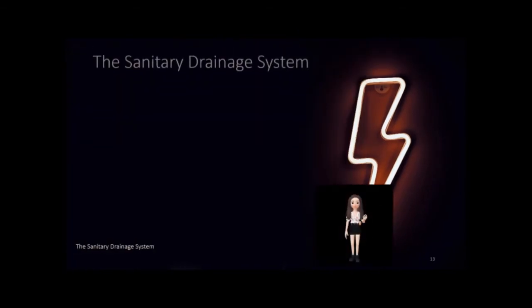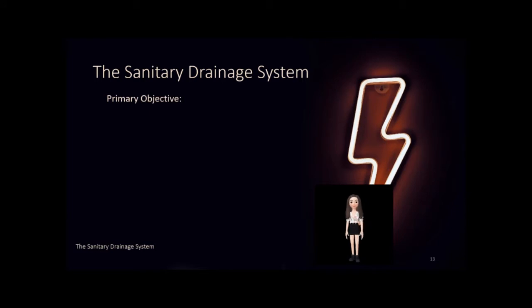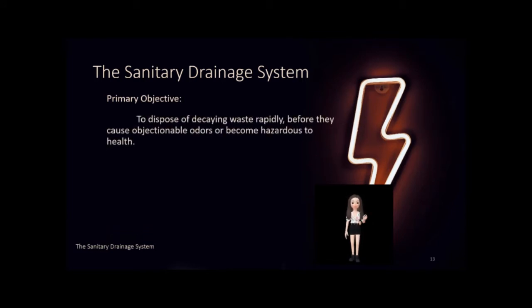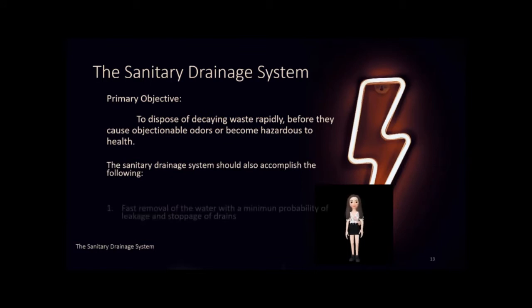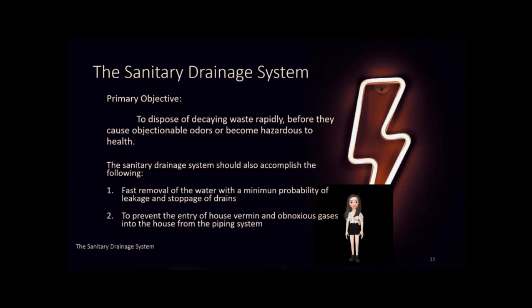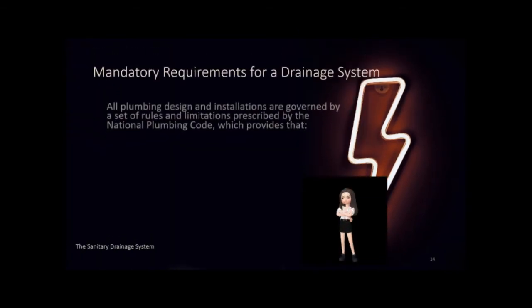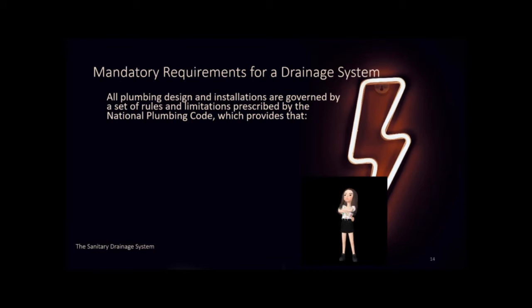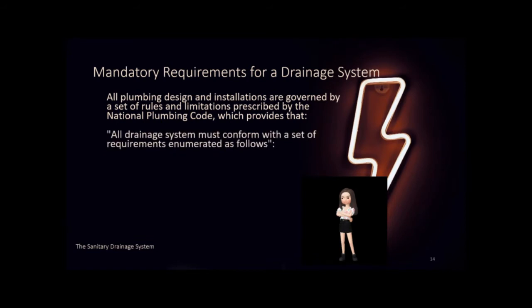Because organic waste in wastewater tends to decompose quickly, one primary objective of the sanitary drainage system is to dispose of decaying waste rapidly before it causes objectionable odor or becomes hazardous to health. The system should also accomplish fast removal of water with minimum probability of leakage and stoppage, and prevent the entry of vermin and obnoxious gases into the house. All drainage systems are governed by the national plumbing code, which requires that all pipe joints must be well fitted and tightly connected to prevent leakage of gas and liquid.